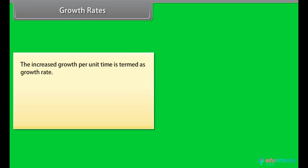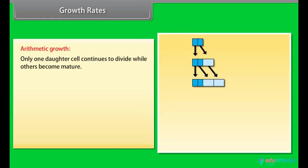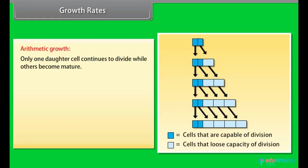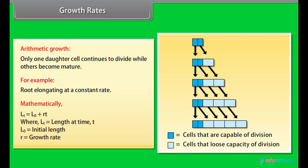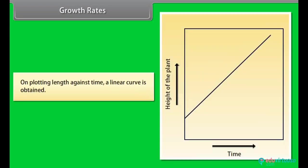Growth rates. The increased growth per unit time is termed as growth rate. Plants show two types of growth: arithmetic and geometric. Arithmetic growth. Only one daughter cell continues to divide while others become mature. For example, root elongating at a constant rate. Mathematically, Lt is equal to L0 plus RT. Where Lt is equal to length at time T, L0 is equal to initial length, R is equal to growth rate. On plotting length against time, a linear curve is obtained.